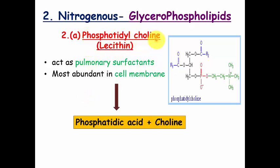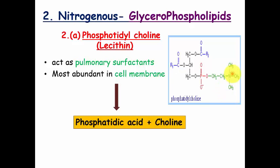The first nitrogenous glycerophospholipid is phosphatidylcholine, otherwise known as lecithin. In the structure of lecithin you will find one molecule of phosphatidic acid - the basic structural unit of glycerophospholipid - which is bound to choline. There is one molecule of nitrogen in the structural formula of choline, that's why it is classified under nitrogenous glycerophospholipid. It is the most important pulmonary surfactant and is also present in various cell membranes.